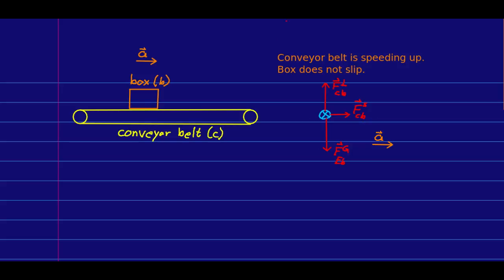So static friction is causing the box to speed up. And does this force do work? Well, again, the point of application is at the point where the box is touching the conveyor belt. But this time, the point of application is moving along with the box. And so there is a non-zero force displacement vector in the direction of motion. And so that tells us right away that the friction is doing positive work.